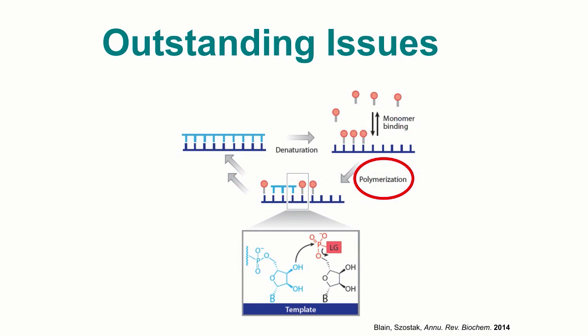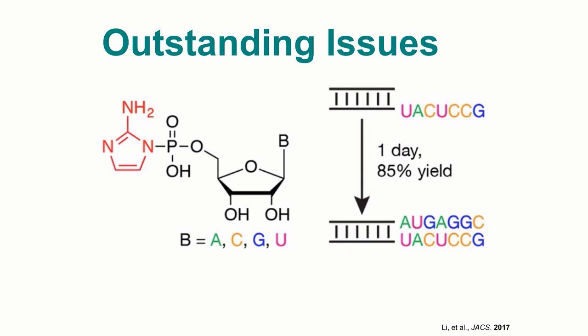Secondly, there are still some issues with the polymerization mechanism in this process. For example, some of the polymerization rates of these activated monomers are not so fast, and they are sometimes prone to degrading. One of the proposed solutions is that perhaps instead of a 2-methylimidazole leaving group, one could change to a 2-aminoimidazole leaving group, and this leaving group actually results in a much faster polymerization rate than the first-generation leaving group activated monomer. It should be mentioned that all of the leaving groups being discussed are laboratory analogues — it may not be true that real living systems on the early Earth used these exact leaving groups. However, these leaving groups do give us a way in the lab to study how a model system could have replicated.